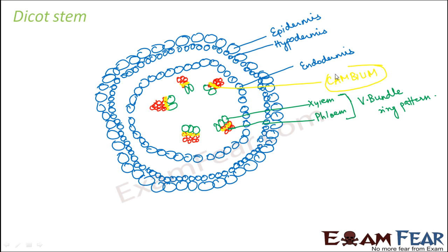This cambium is responsible for the formation of secondary xylem and secondary phloem, which in turn is responsible for secondary growth. This is a meristematic tissue. Because of this, the stem becomes wider and wider, as they are capable of cell division and can form new xylem and phloem cells. So this is another very noticeable difference in case of a dicot stem.